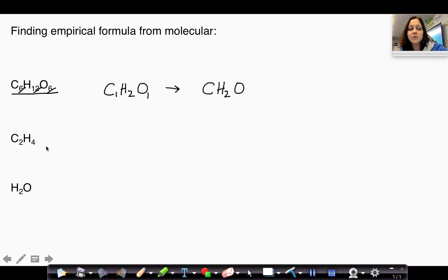For C2H4O, the two and the four can each be divided by two, so C2H4O would be the molecular formula, whereas CH2O would be the empirical formula.